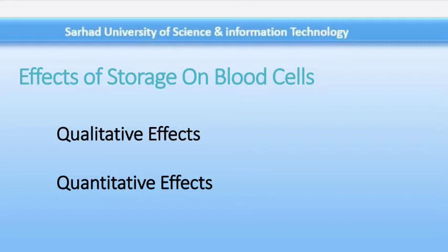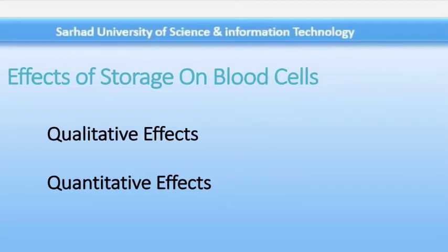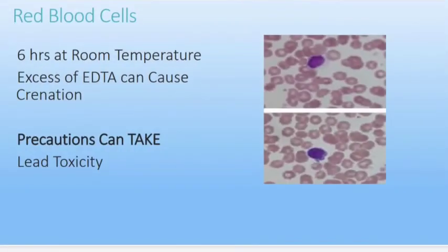Normal red cells are little affected by standing for up to six hours at room temperature. Longer periods lead to progressive crenation in the morphology of the red blood cell, and some sphering is also observed. In the presence of EDTA, a marked degree of crenation can occur within a few hours. All the above changes are retarded but not abolished in blood kept at four degrees centigrade.